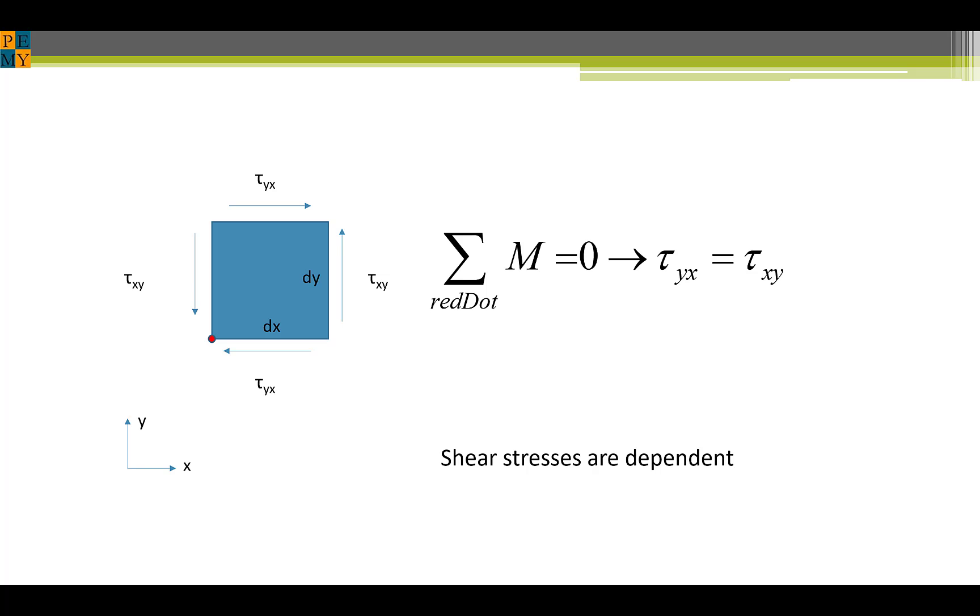If we take the moments about the corner shown here, the moments drop out for these two shear stresses. And we can see that for equilibrium, tau yx must be equal to tau xy.